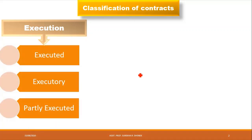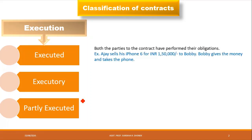On the basis of execution there are three types: executed, executory, and partly executed. 'Executed' — the suffix 'ed' means past tense, meaning both parties to the contract have completed their performance.